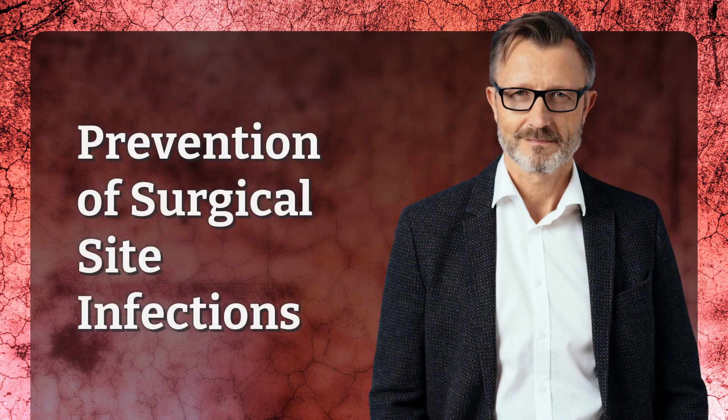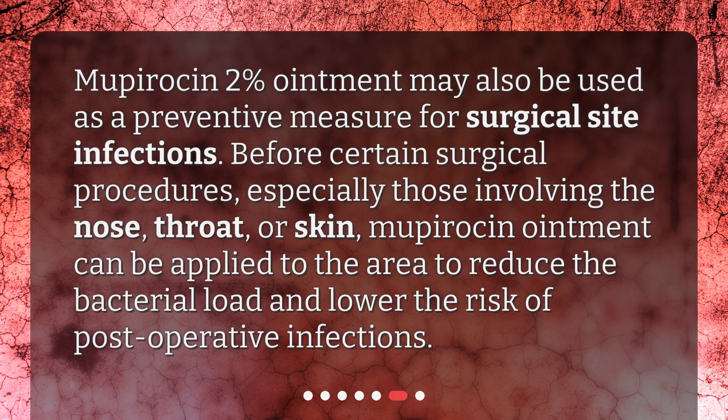Prevention of Surgical Site Infections. Mupirocin 2% ointment may also be used as a preventive measure for surgical site infections. Before certain surgical procedures, especially those involving the nose, throat, or skin, Mupirocin ointment can be applied to the area to reduce the bacterial load and lower the risk of post-operative infections.